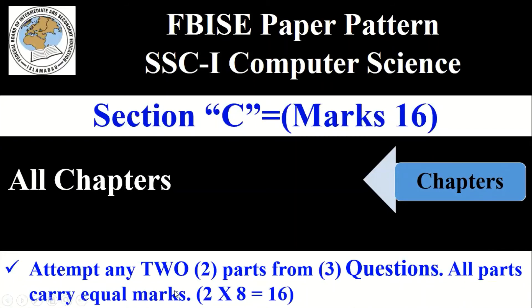Each question in Section C carries 8 marks, and you have to attempt only 2 questions. So 2 times 8 equals 16 marks. One question choice is also given in Section C.